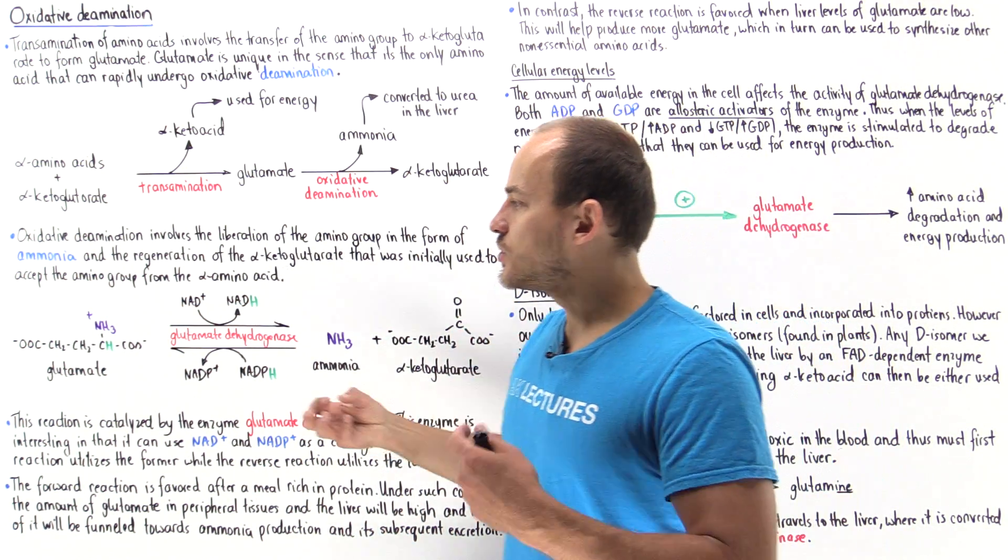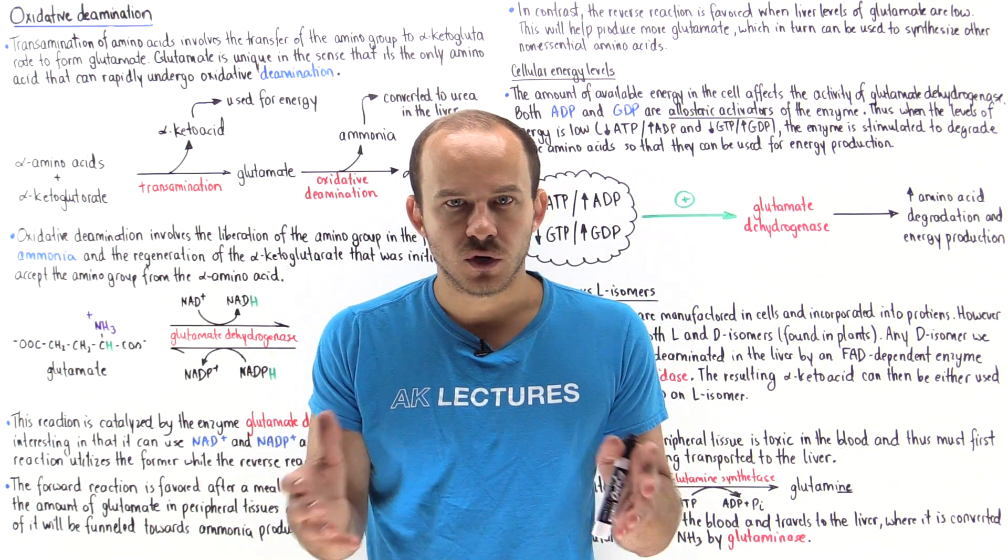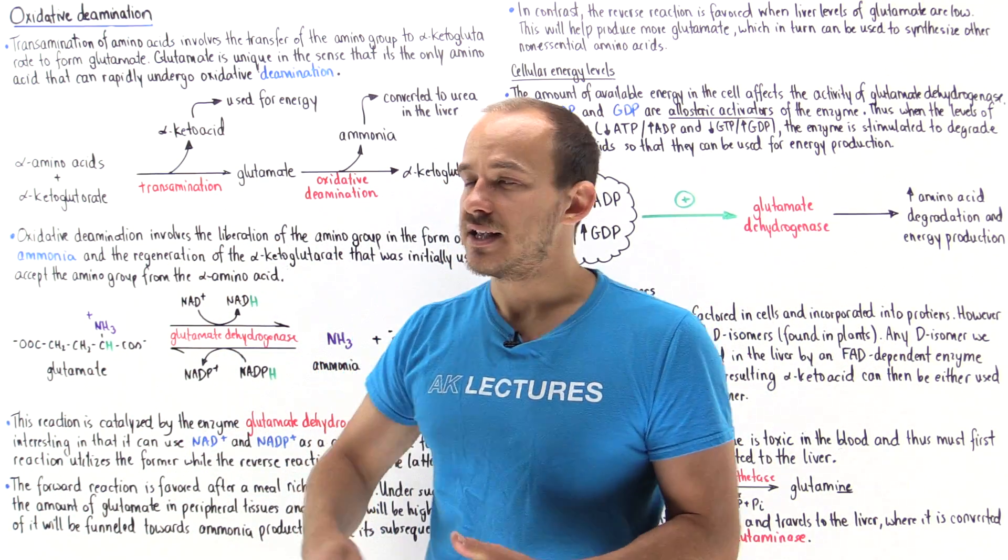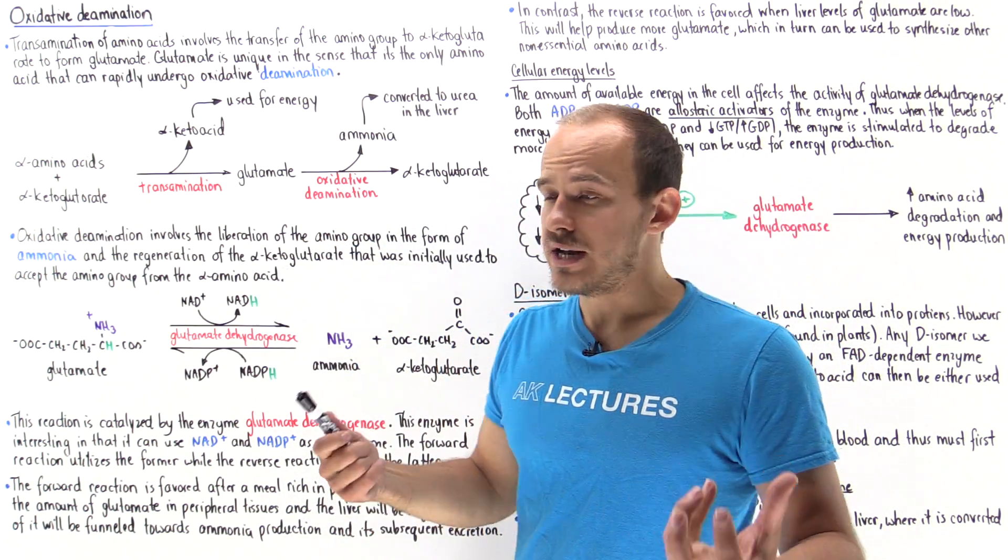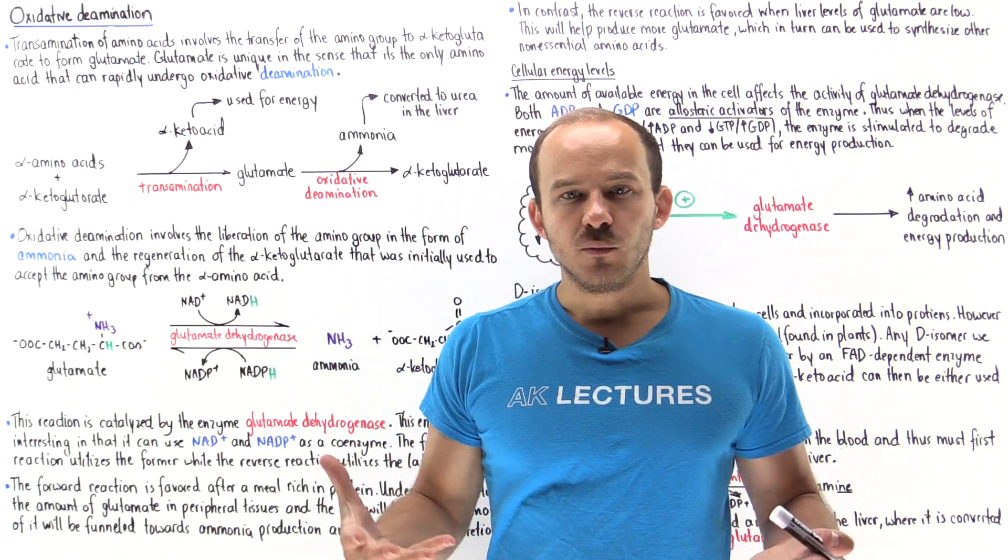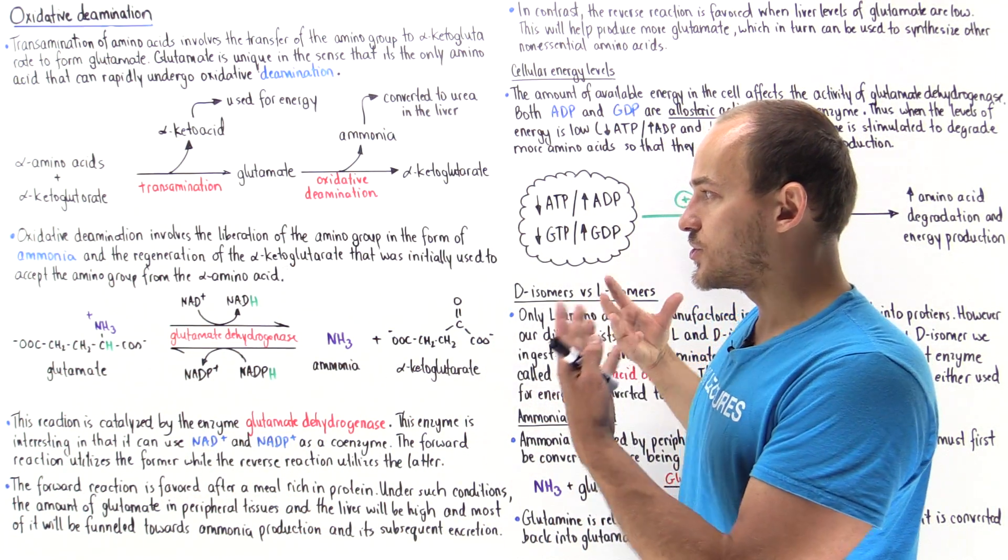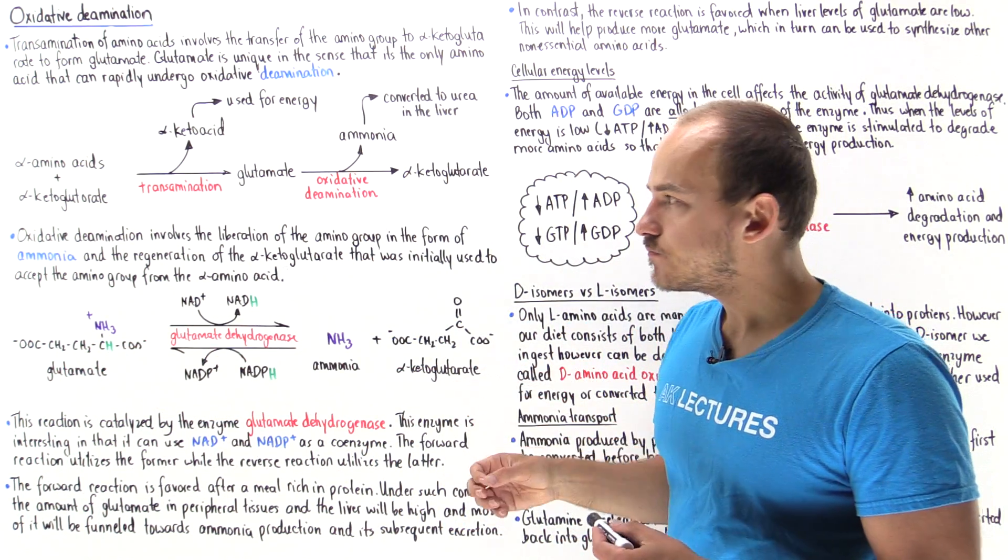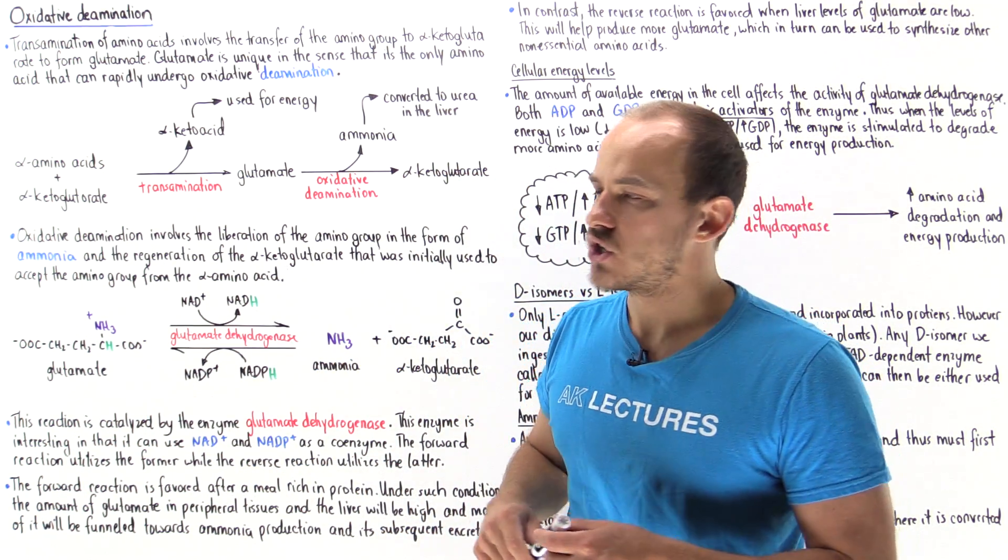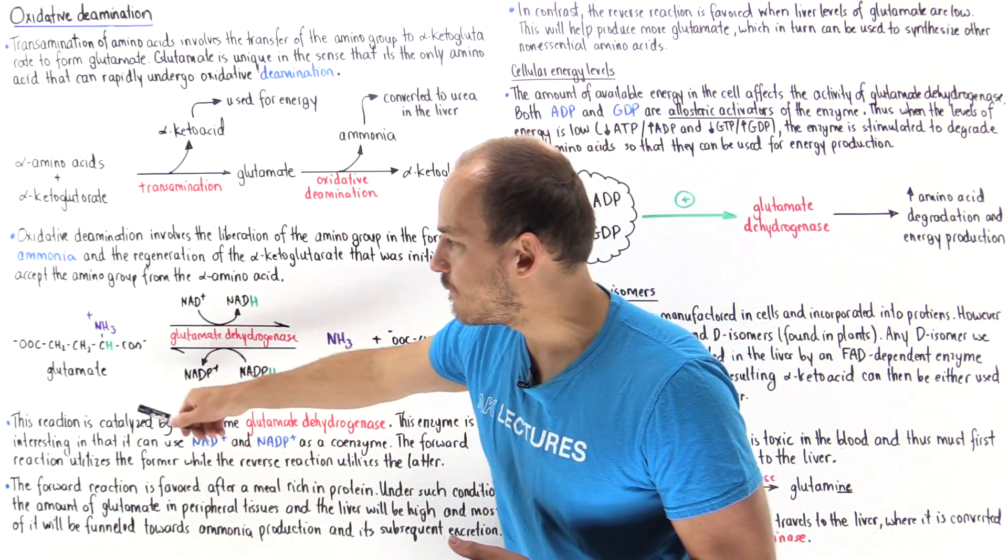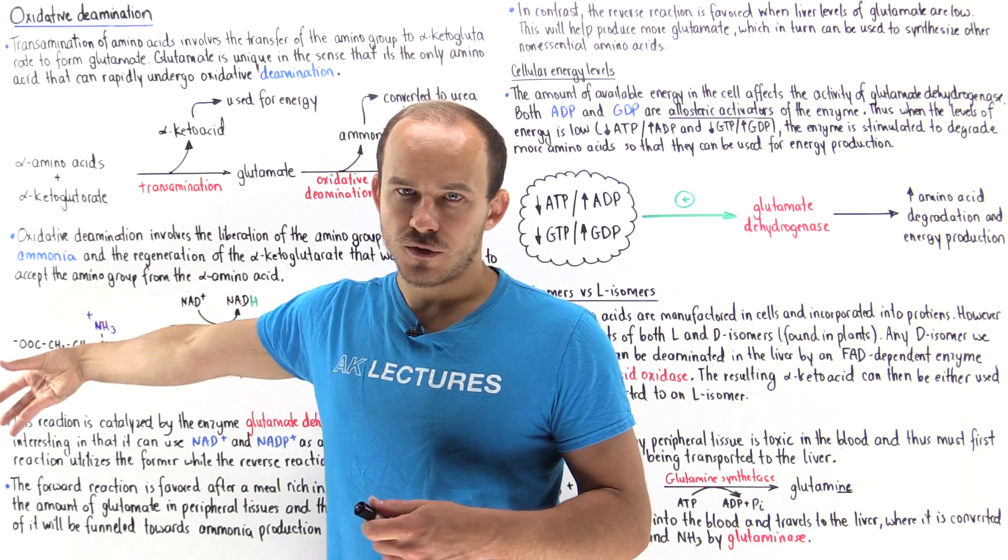Under which conditions are we going to favor the forward process? If we ingest a meal that is rich in protein we're going to break the protein down into a ton of amino acids and so many of these amino acids which are unused are going to be converted into glutamate. In our cells we're going to have a lot of glutamate. We know from basic chemistry if we have a lot of reactants that will favor the forward process. The reverse is true if we have low levels of glutamate within our body. If we have few amino acids we're going to have few glutamate molecules and this will favor the reverse process.